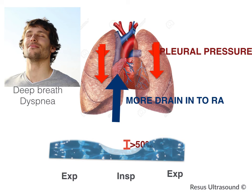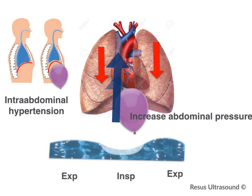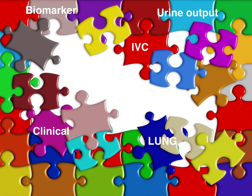Another condition to be careful about is increased intra-abdominal pressure or intra-abdominal hypertension. When there is a lot of ascites or pressure in the abdomen, it pushes blood from the IVC so much that the IVC abnormally collapses in the inspiration phase. Conditions that increase intra-abdominal pressure include obesity, severe acute pancreatitis, and acute kidney injury or patients on CRRT. In these cases, do not interpret IVC solely. Remember, IVC is only one piece of the jigsaw in your patient assessment.